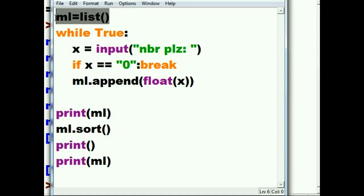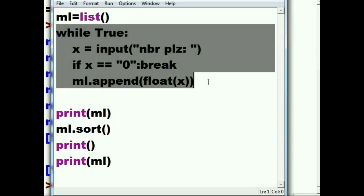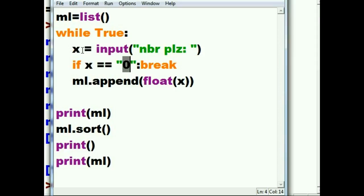Here we create a list called ml and we run into a loop which we continue to do while it's true. We input numbers, it gets assigned to x. As soon as there's a zero in x, it breaks out of the system.